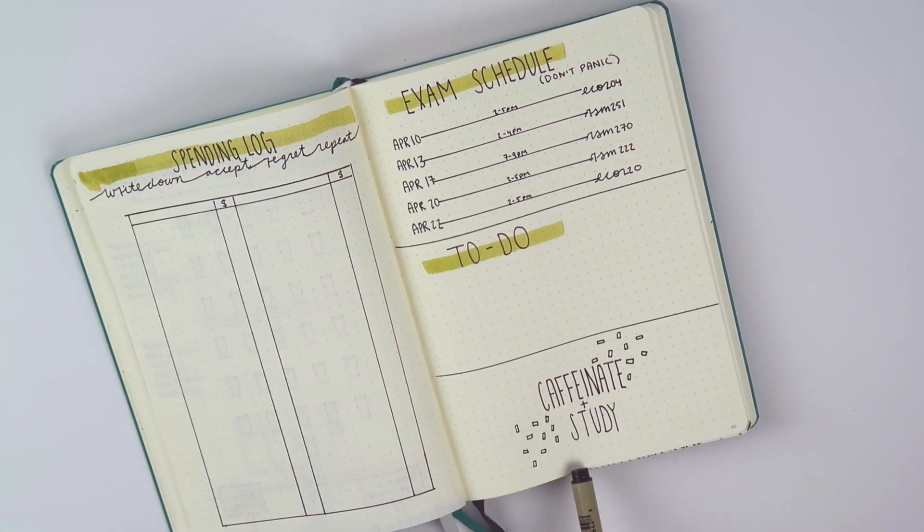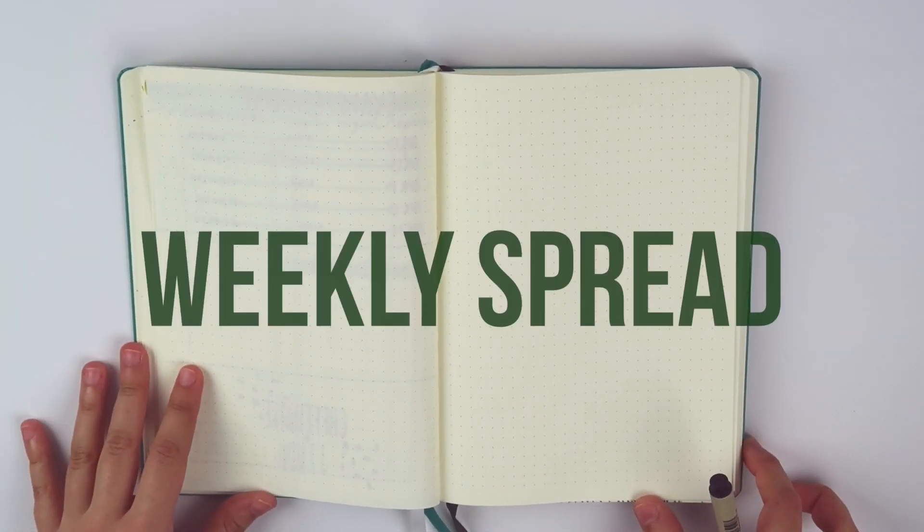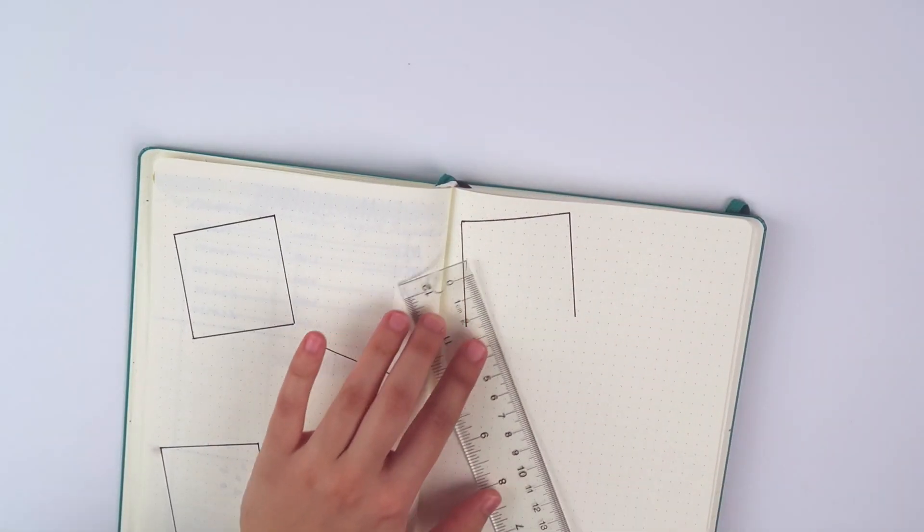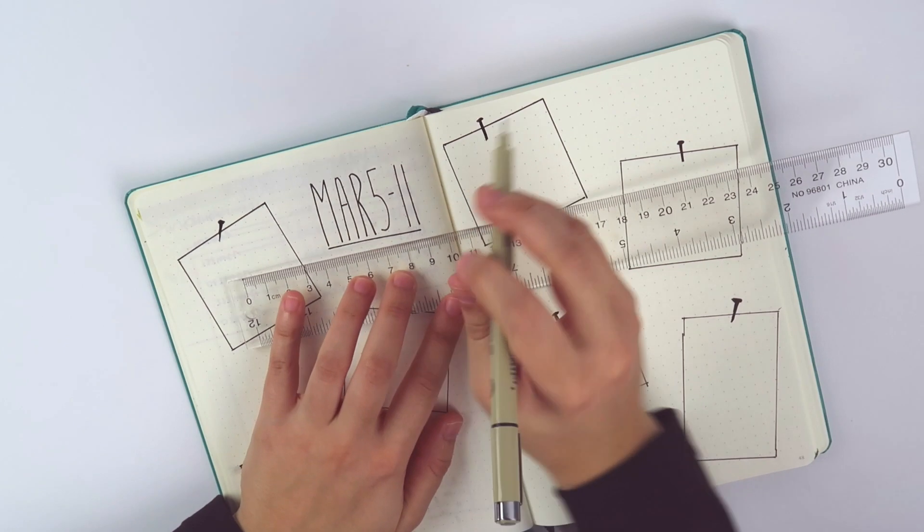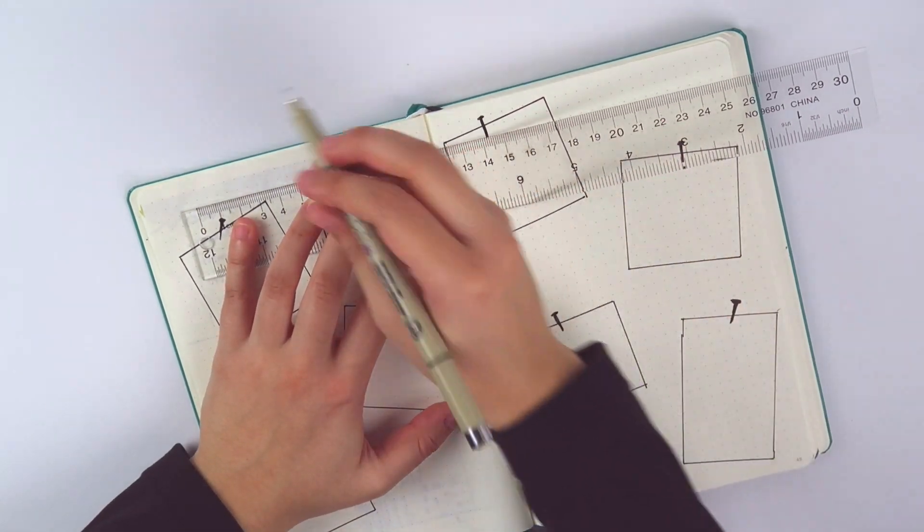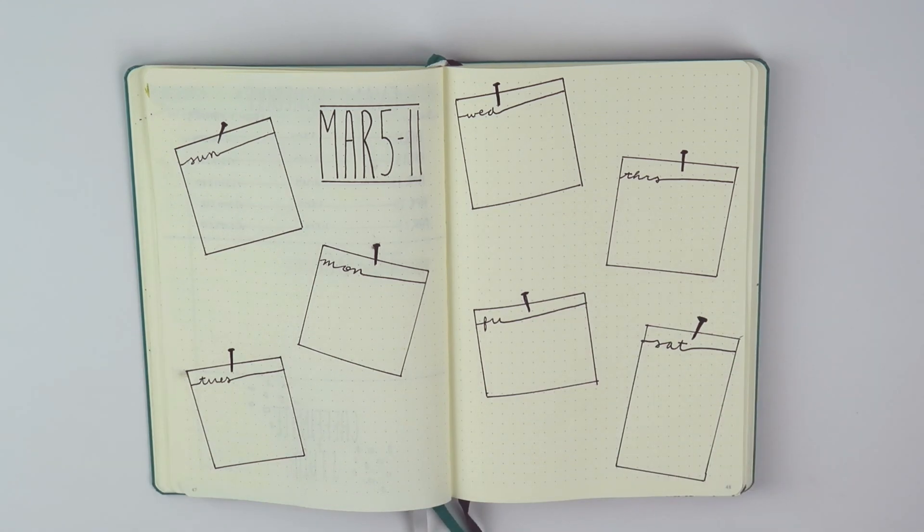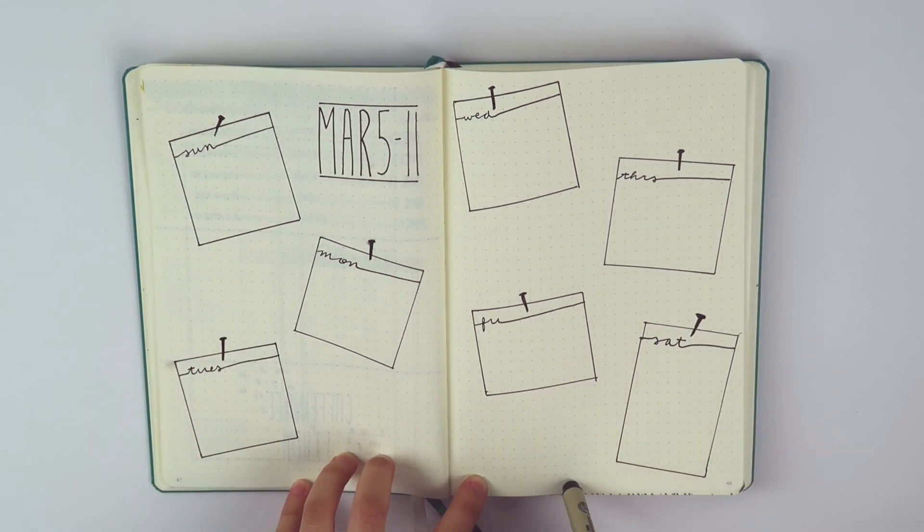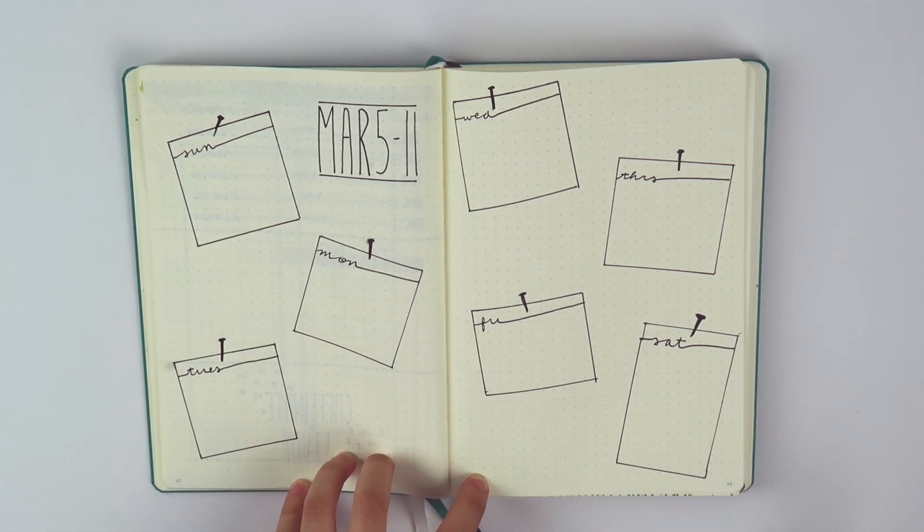And the last two pages are going to be my weekly spread. And voila, there's my weekly spread. I kind of went for that whole pinning something on the wall look again, and I have obviously seven boxes for each day of the week.